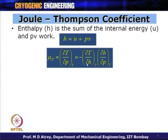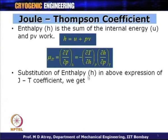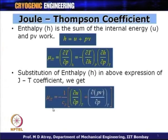This is what we have seen earlier. When I know del H by del P, I find it at constant temperature, and del T by del H at constant pressure. Substituting H equals U plus PV into the JT coefficient expression, what we get is mu_JT equals one over Cp — since del T by del H equals 1/Cp — times the quantity del U by del P at constant temperature plus del(PV) by del P at constant temperature.